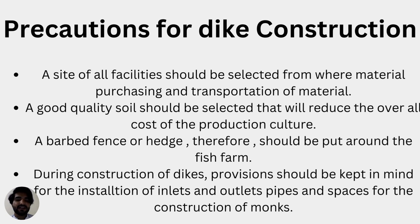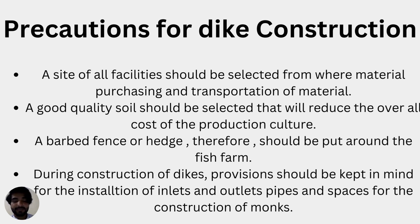The precautions for dike construction include: selecting a site with good access to facilities so material and feed can be easily transported from nearby areas; selecting good quality soil that will reduce overall production costs and resist erosion; installing a barbed fence or hedge around the fish farm when animals are nearby to prevent damage; and during construction, making provision for the installation of inlet and outlet pipes and spaces for monks, ensuring inlets and outlets can be easily installed in your fish farm.